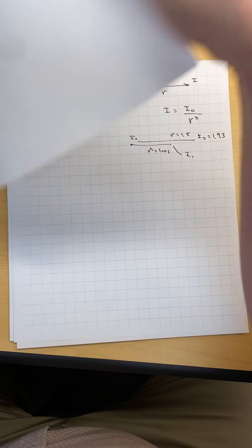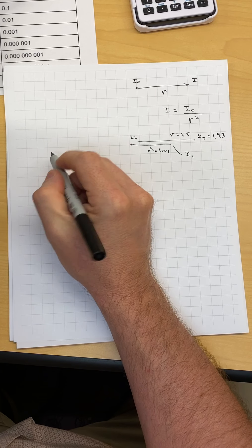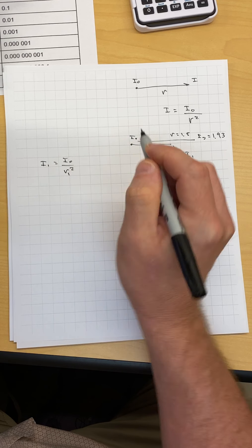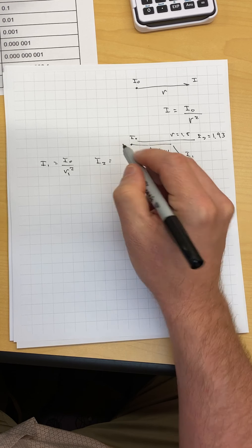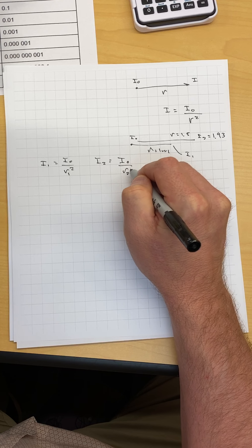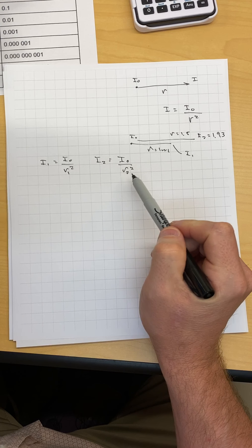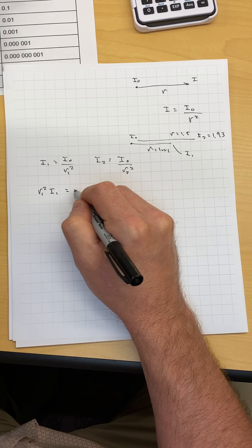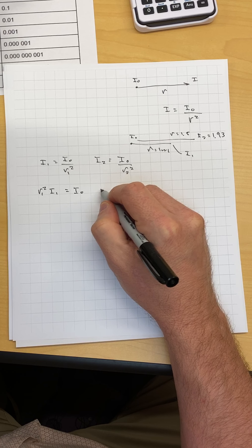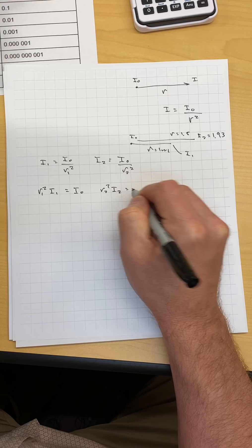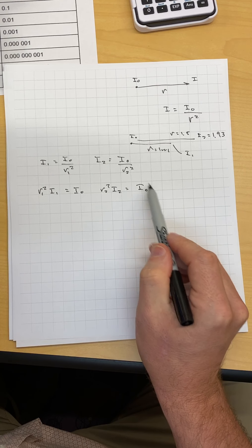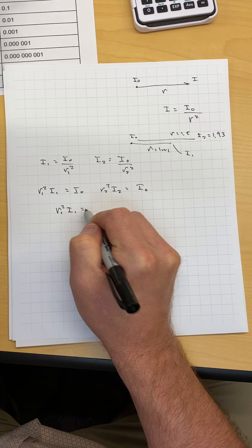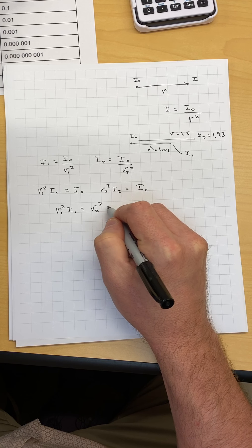So we can actually quickly derive the inverse square law. So we have I at position 1 is equal to I0 divided by R1 squared. And we have I at position 2 is equal to the same I0 divided by R2 squared. If we take this R, bring it up to here, take this R, bring it up to there, I get R1 squared I1 is equal to I0. R2 squared I2 is equal to I0. So both of these equations are equal to I0, so we can just set these two things equal to each other. R1 squared I1 is equal to R2 squared I2.